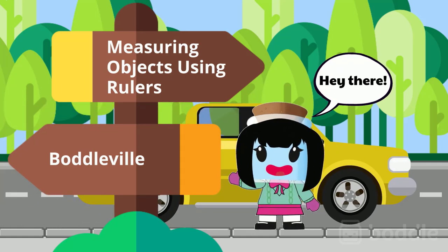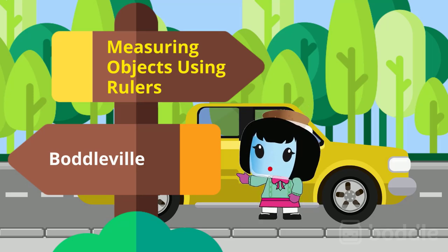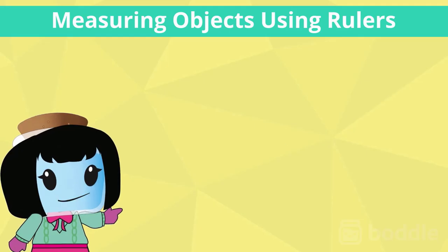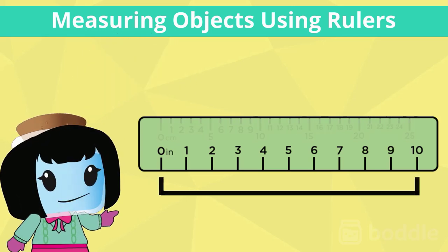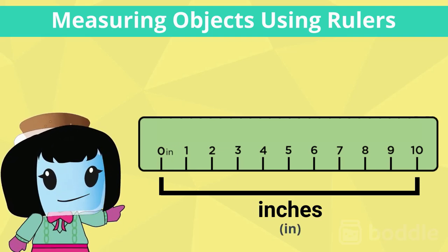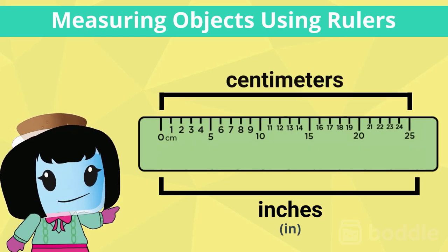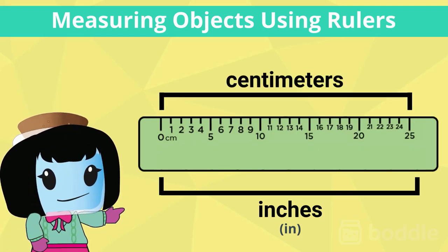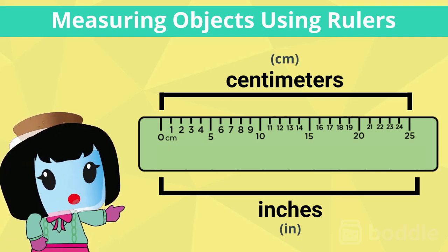Hey there, in this lesson we will be measuring objects using rulers. Remember that a ruler has two different measurements on it. One side is for measuring in inches, which is represented by the abbreviation IN on the ruler. The other side is for measuring in centimeters, which is represented by the abbreviation CM on the ruler.